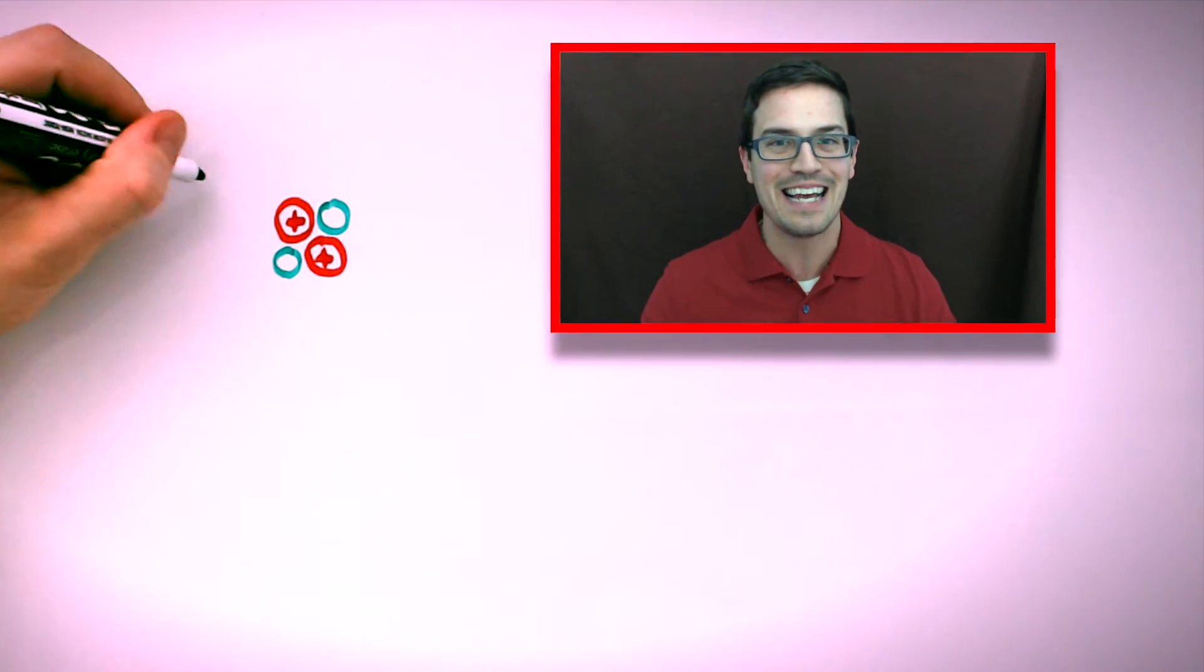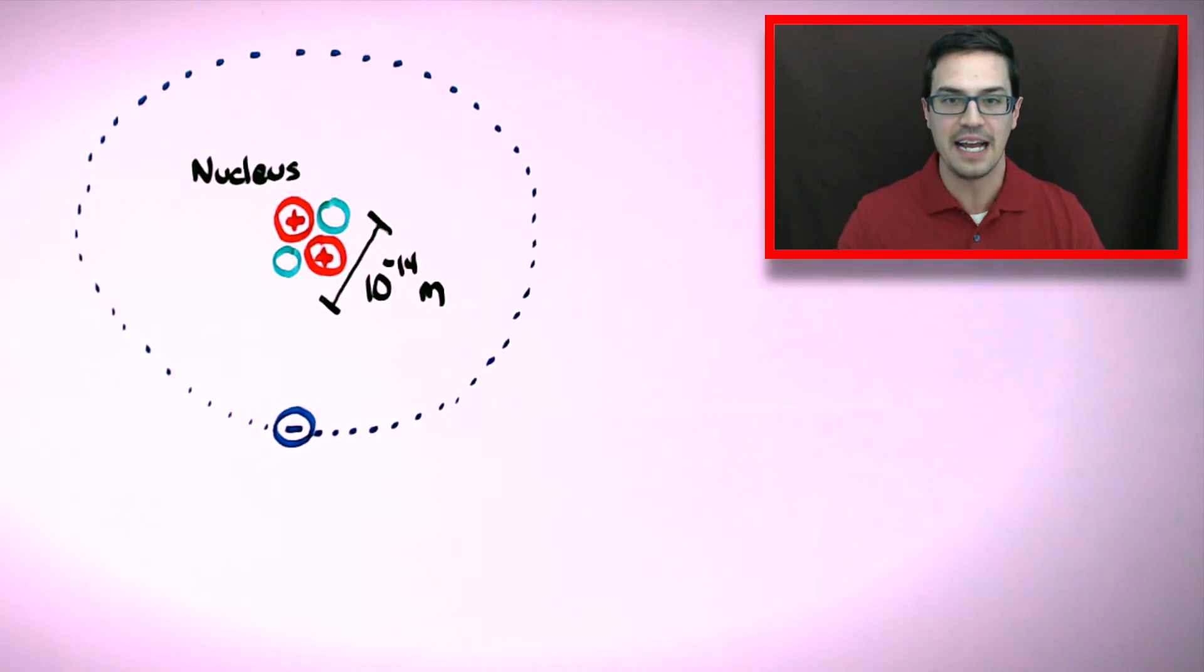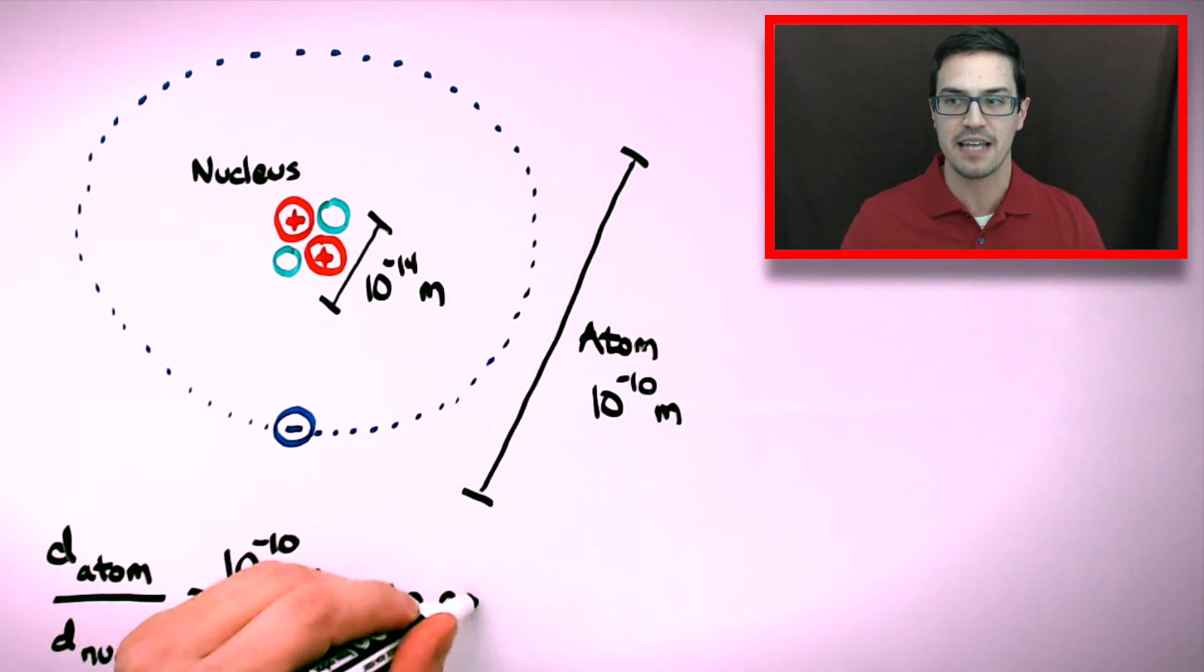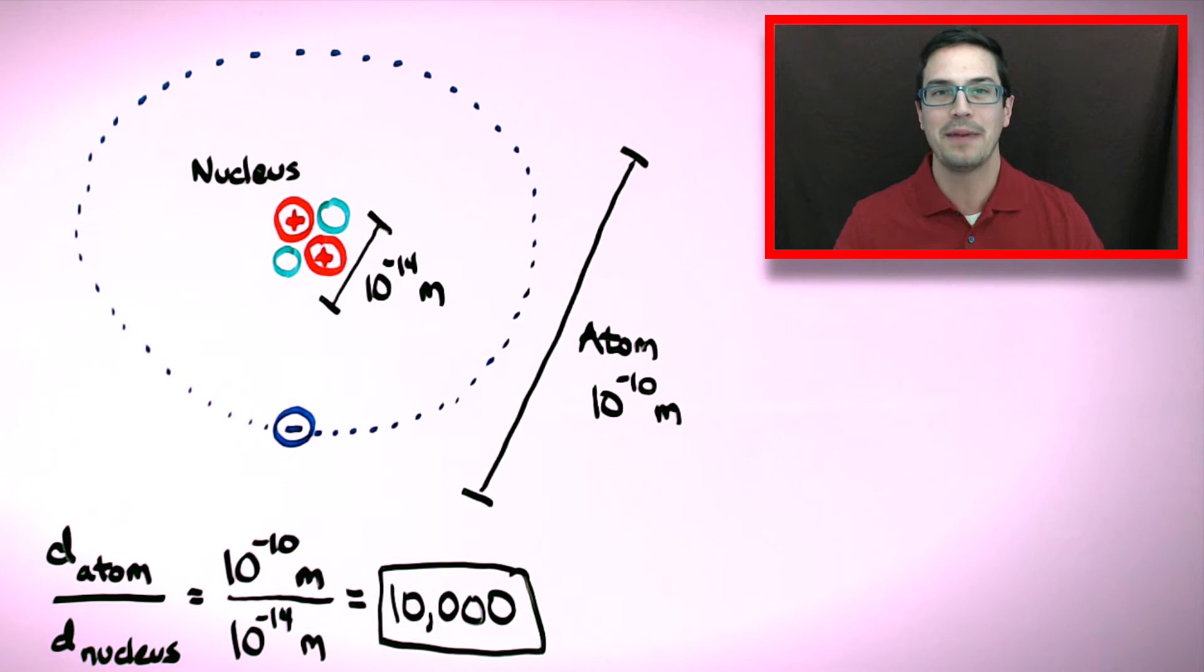The diameter of a nucleus is about 10 to the negative 14th meters. The diameter of an atom is about 10 to the negative 10th meters. This means that an atom is about 10,000 times bigger than its center.